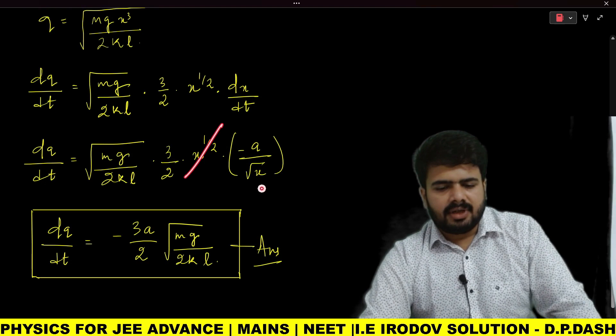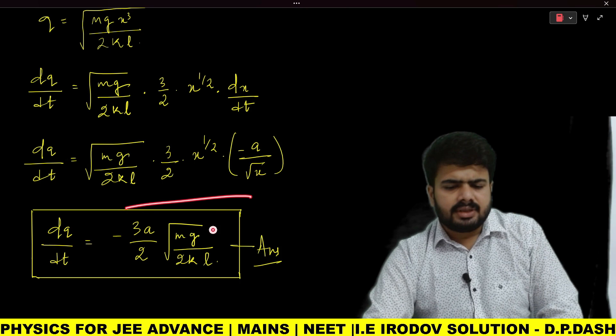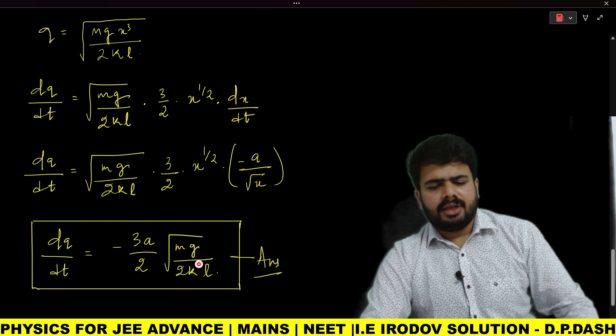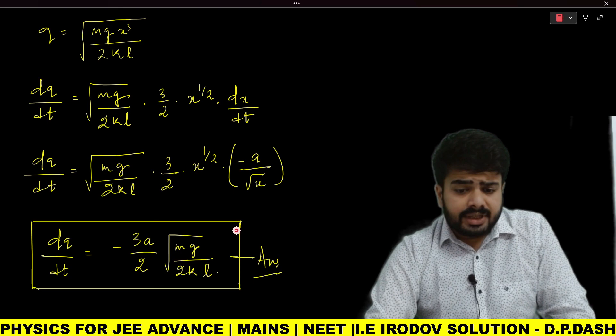Rearranging this equation, you get your answer: dq/dt = -(3a/2)√(mg/(2kl)).